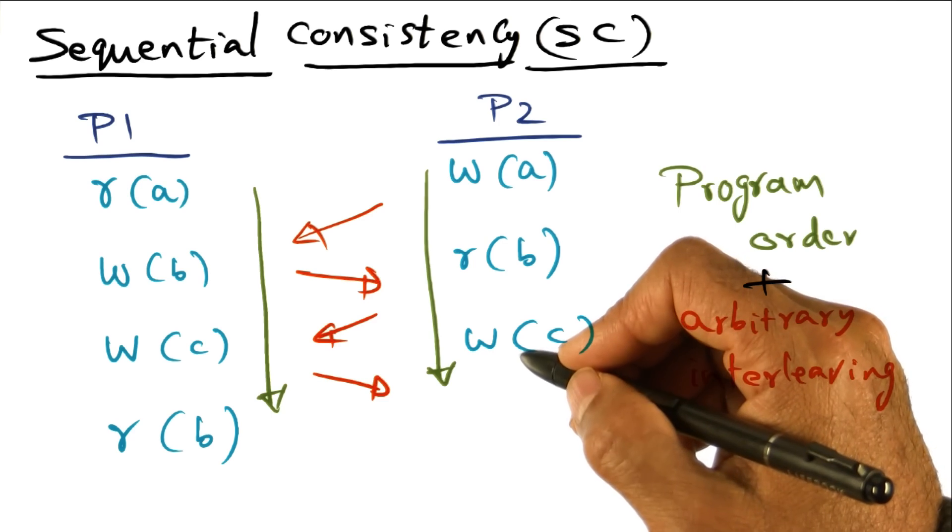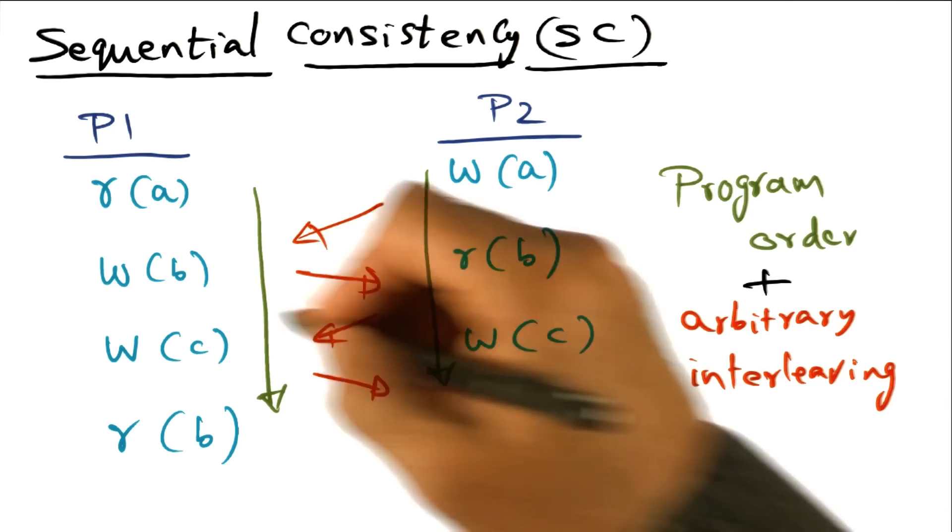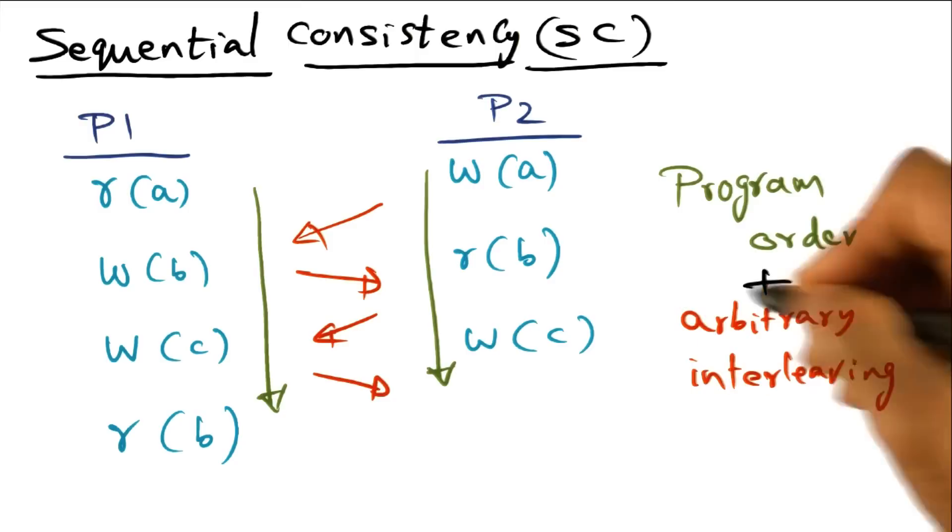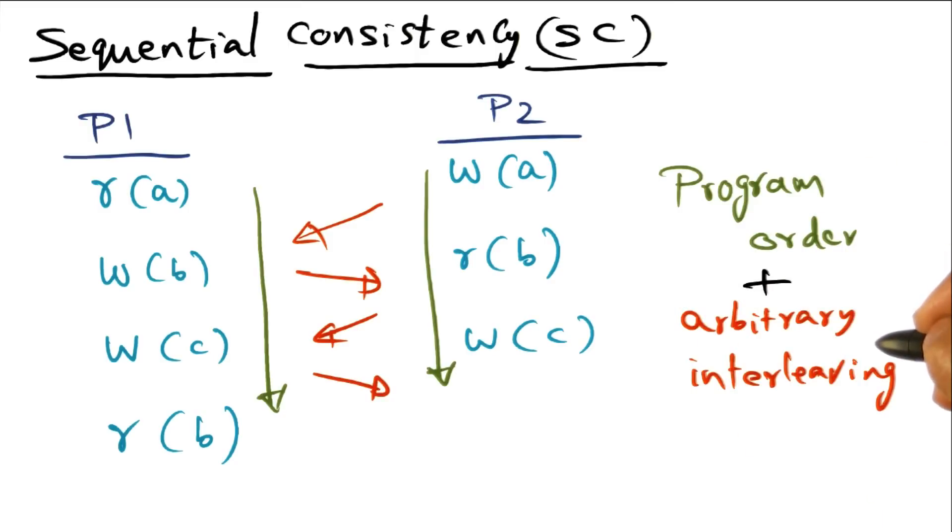And in order to think about the interleaving of the memory accesses that are happening on different processors, that can be arbitrary and that should be consistent with the thinking of the programmer.